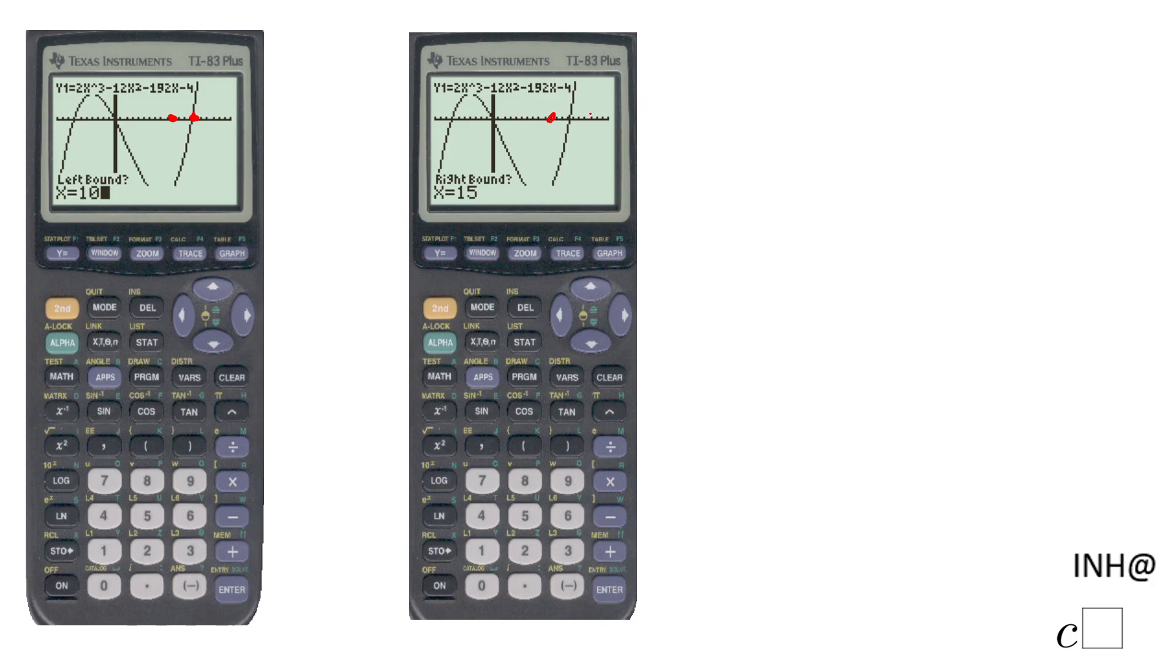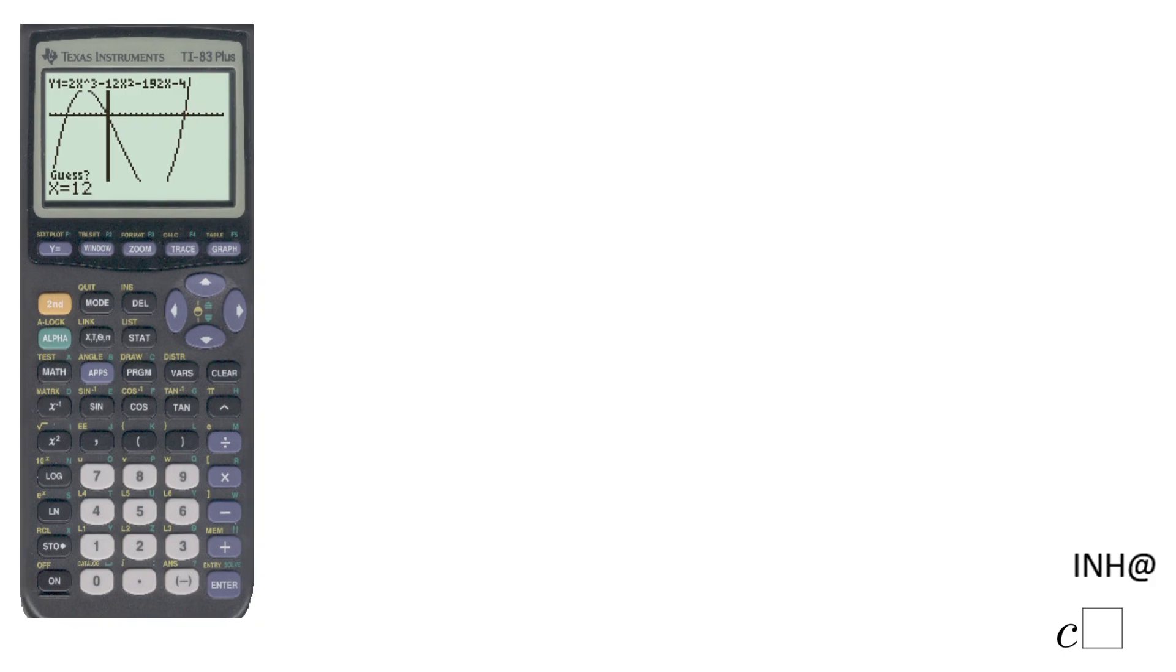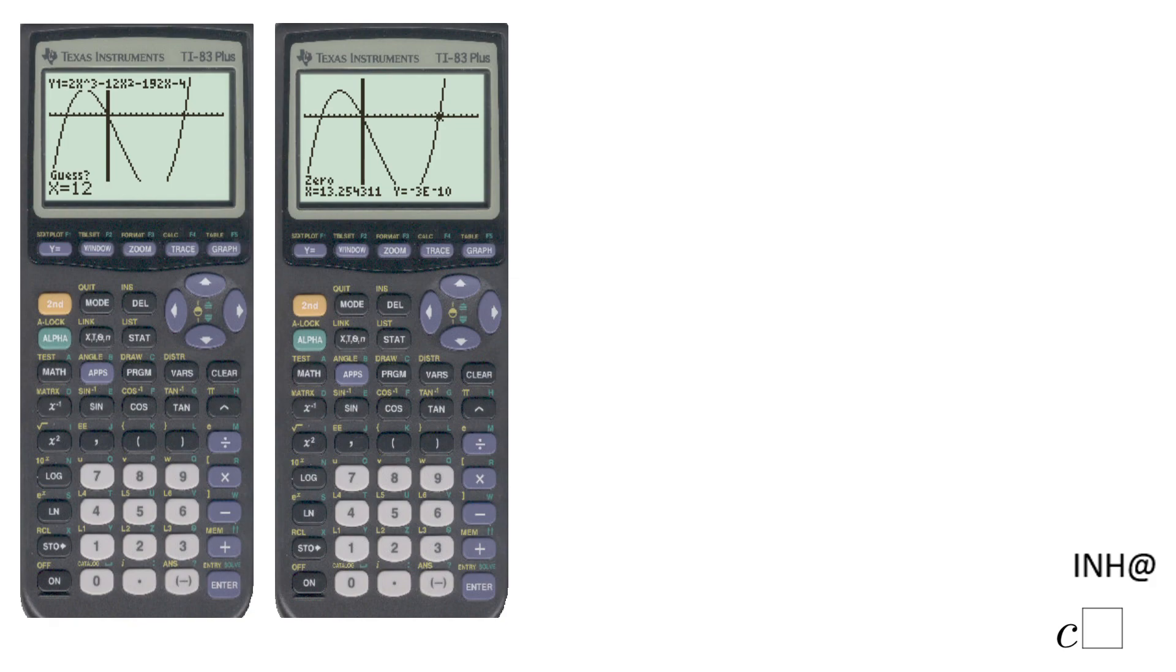I'm going to click a right bound that is larger than this x-intercept, and I set 15. Now you can click something else, but be sure it's in this window. After you click Enter, the calculator is going to ask you to guess a number. I guess 12. The number that you guess needs to be between the left bound and the right bound.